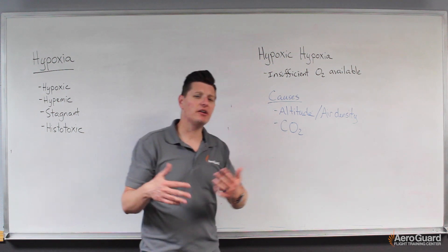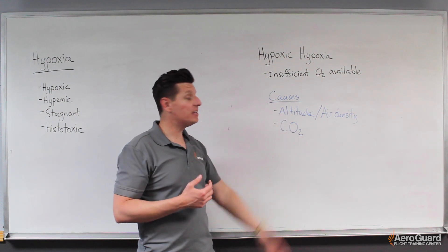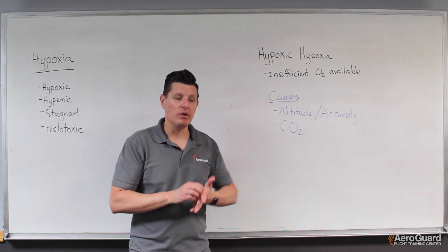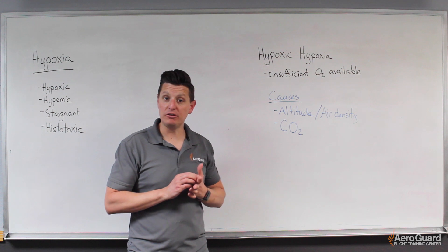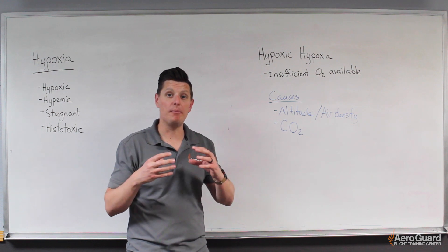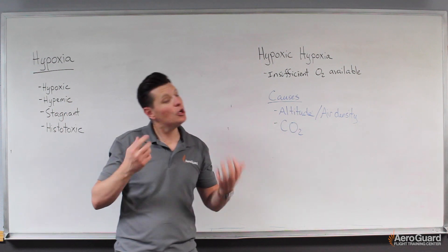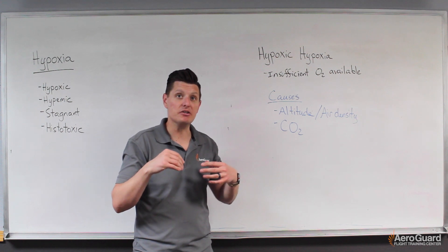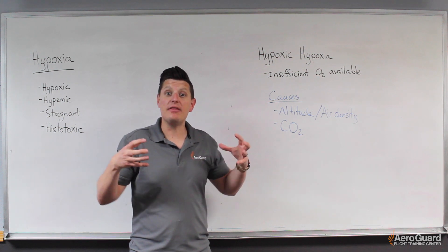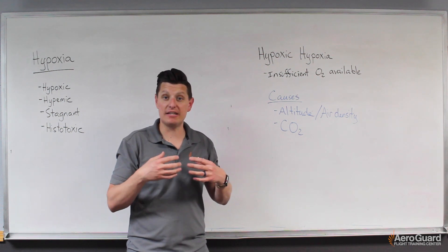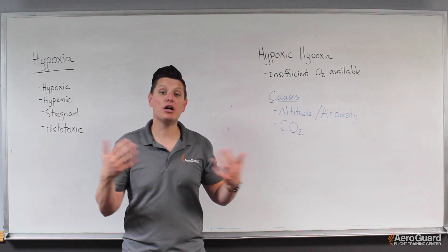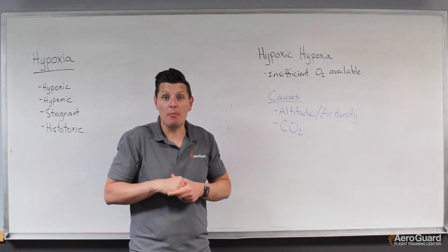The most common example is altitude, which is really about air density. As we climb in altitude, the air becomes less dense, meaning the same number of air molecules take up a larger volume. Our lungs have a fixed volume, so if the air is less dense, there are fewer oxygen molecules available in that volume for our body to use.